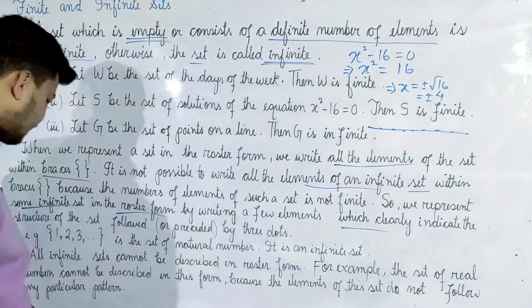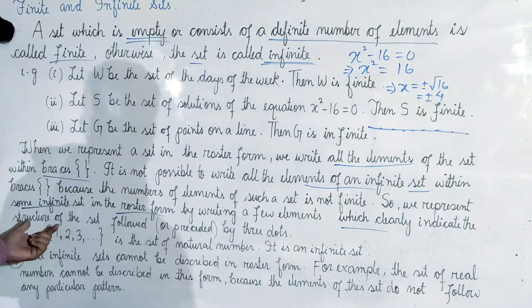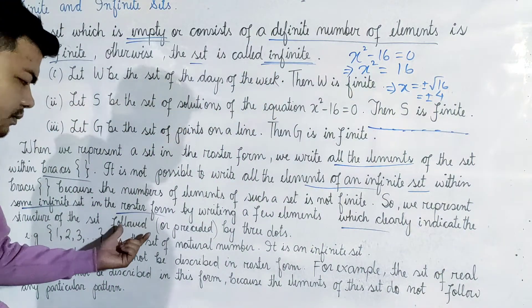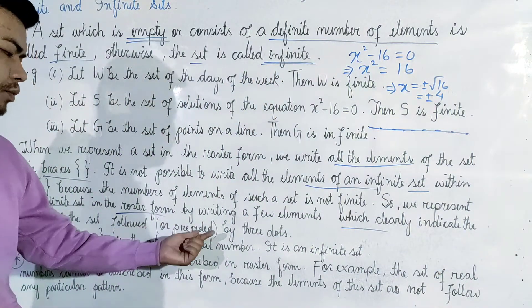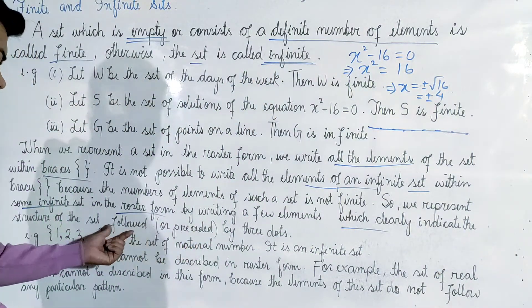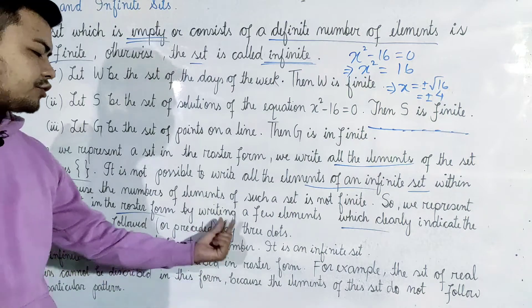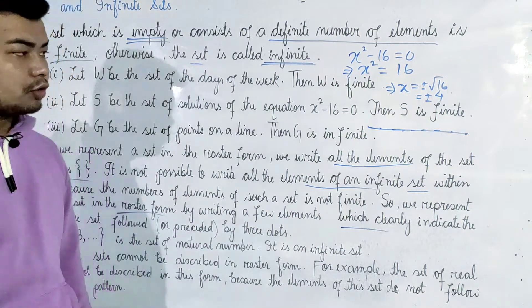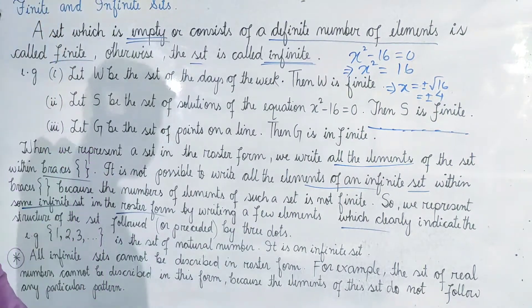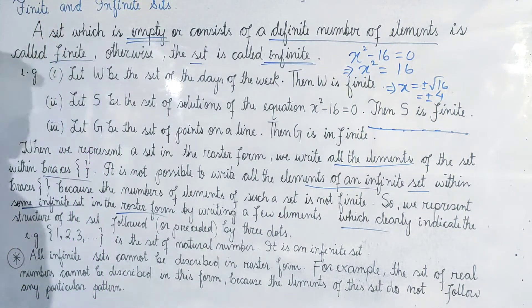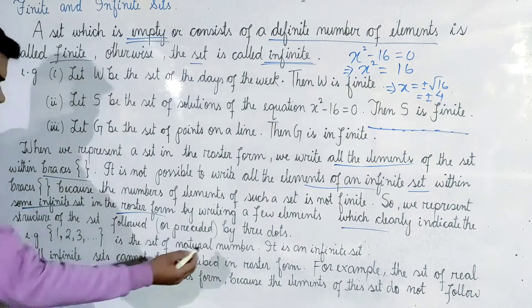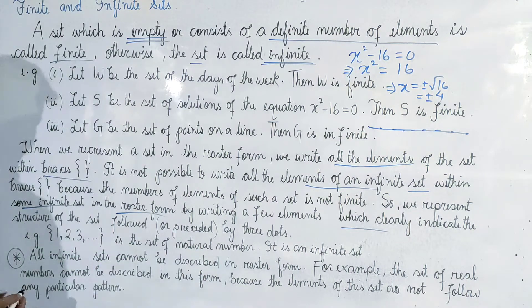For an infinite set, we write some elements followed by three dots to indicate the pattern continues. For example, the set of natural numbers is represented this way.